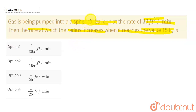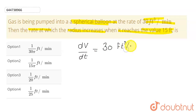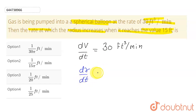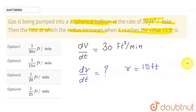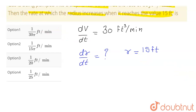Let the volume of the spherical balloon be V. We are given that the rate of change dV/dt is 30 cubic feet per minute. What we have to find is the rate at which the radius is increasing — we have to find dr/dt when the radius r reaches the value of 15 feet.